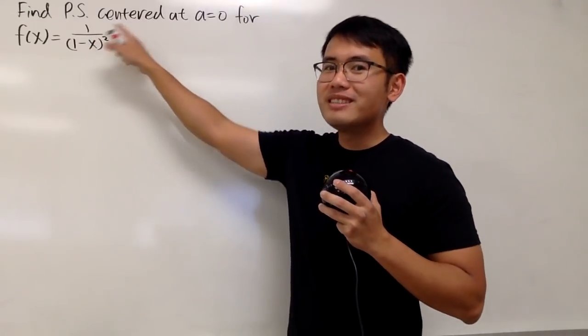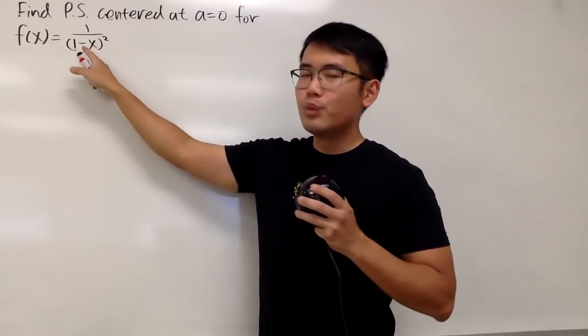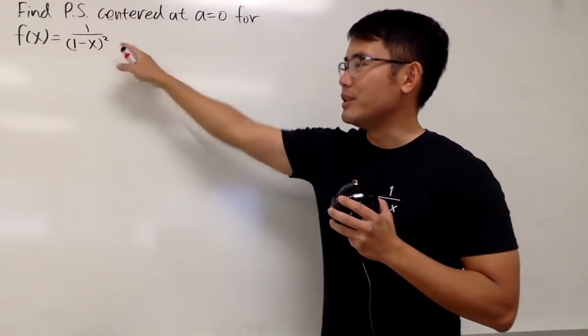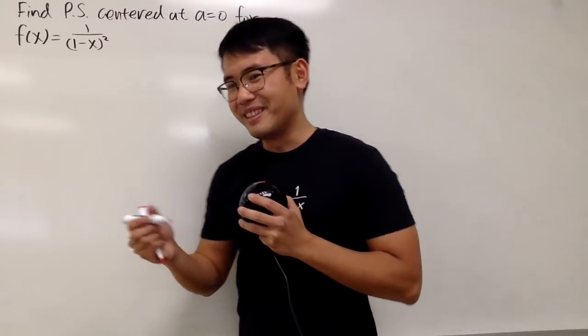Here we go, we are going to find the power series expansion centered at 0 for this function, namely 1 over (1-x) to the second power. Let's put it down right here.